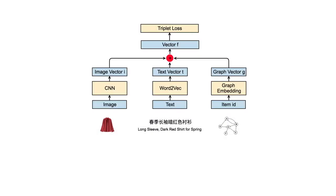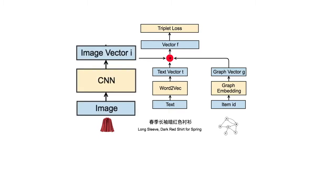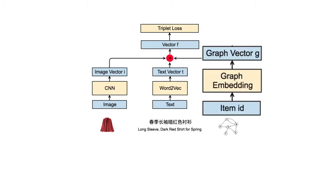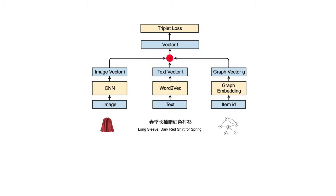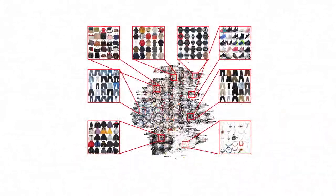First of all, for every fashion item, we compute a nonlinear feature embedding. We use a multi-modal embedding model that takes the image, the title, and the CF embedding of every item as the input. The entire network is then trained using the triplet loss. Our goal is to obtain an embedding space where similar items are embedded nearby and different items lie in different regions.